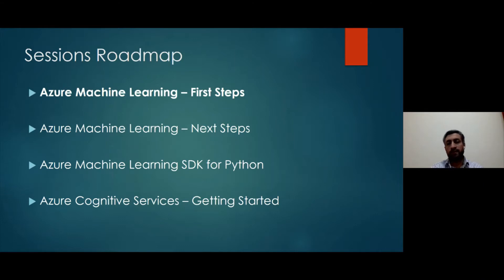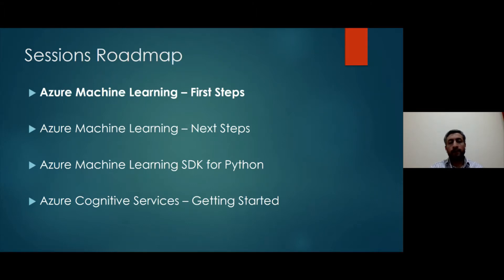Then we have the second session, which is next steps, supposed to be next Wednesday. We have the third session about machine learning SDK for Python, where we get deeper about implementing machine learning models programmatically, implementing those models using Python and exploring Jupyter notebooks. The fourth session would be about Azure Cognitive Services — an introductory session about cognitive services in Azure and how to use them in practical situations, especially for people coming from a development background who want to utilize these services without too much hassle about building models from scratch.